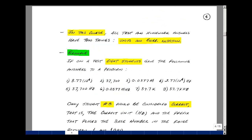In all the tests and homeworks for this course, we'll have two things with our answers: units and engineering notation. Take a look at an example. Suppose that on a test, eight students gave the following answers: 3.77 times 10 to the fourth, 37,700, 0.0377 meg, 3.77 times 10 to the fourth hertz, 37,700 hertz, 0.0377 megahertz, 37.7k, and 37.7 kilohertz.